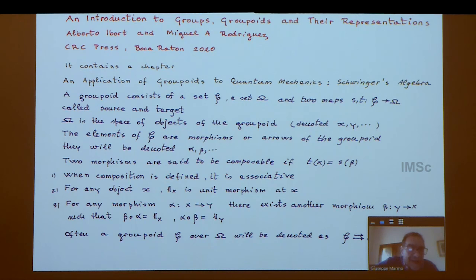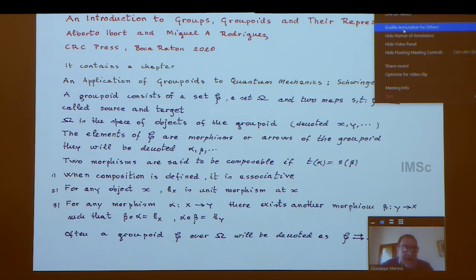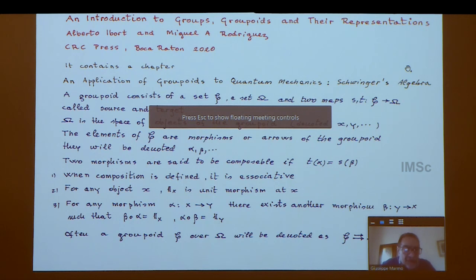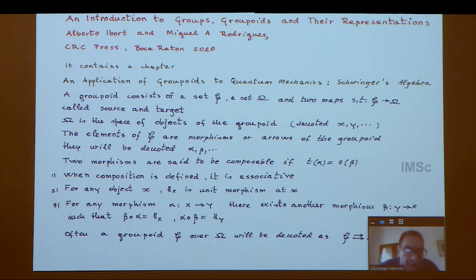Having said this, let's go back to groupoids. When you go to groupoids, the literature is quite vast. However, there is a nice book written by two physicists, Alberto Ibort and Michael Anka Rodriguez, where there is a chapter with most of what I'm going to say from the mathematical point of view. What is a groupoid?